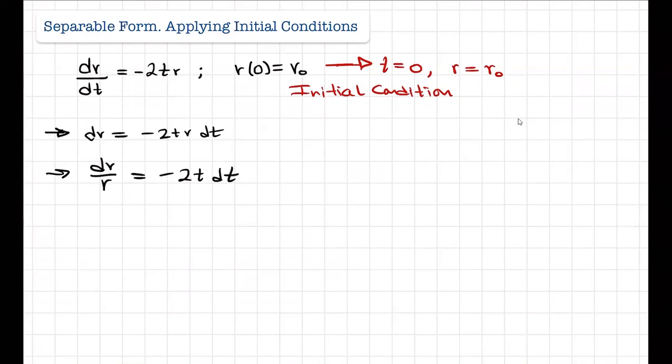Okay, so now we are going to integrate this. We have the integral of dr/r, and this will be equal to the integral of negative 2t dt. So we're going to be getting here, for dr/r, we already know that's ln of r.